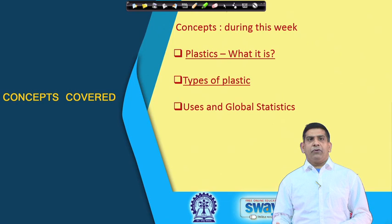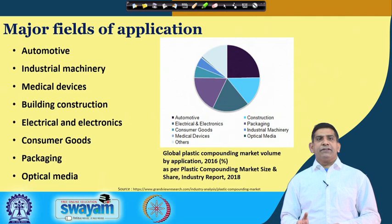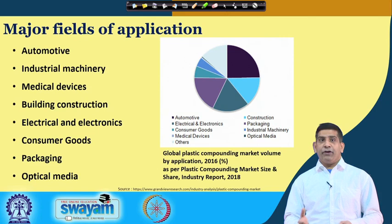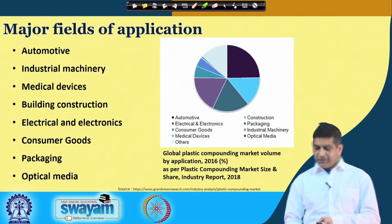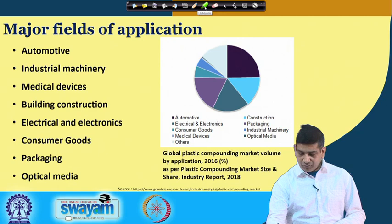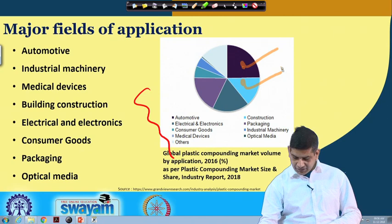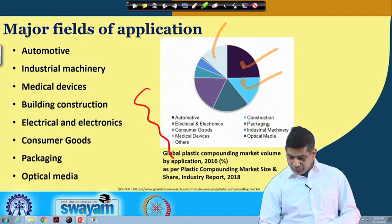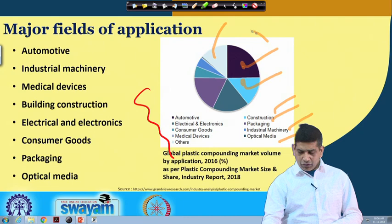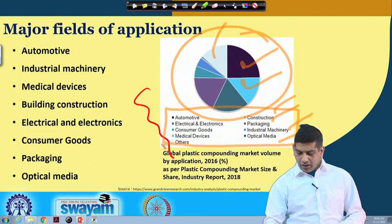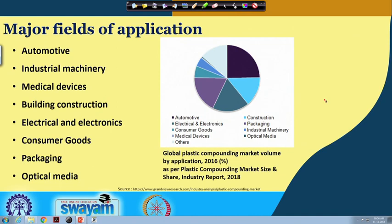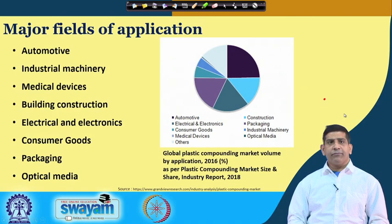We will get started and look at the use and global statistics. What are the major fields where plastic is used? I have been telling you in the last three videos that we use plastic basically everywhere, but where is the maximum quantity of plastic being used? This pie chart shows the distribution across different sectors: automotive, electrical and electronics, consumer goods, medical devices, construction, packaging, industrial machinery, and optical media.